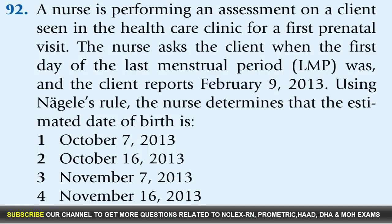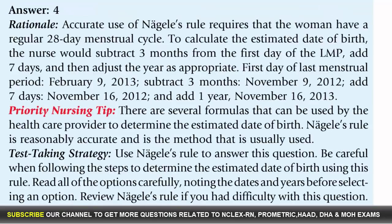Question 92: A nurse is performing an assessment on a client seen for a first prenatal visit. The client reports the first day of the last menstrual period (LMP) was February 9th, 2013. Using Nagele's rule, the nurse determines the estimated date of birth is: 1. October 7th 2013, 2. October 16th 2013, 3. November 7th 2013, 4. November 16th 2013. Answer: 4. Rationale: Using Nagele's rule, subtract 3 months from the first day of the LMP and add 7 days, then adjust the year. February 9th 2013, minus 3 months = November 9th 2012, plus 7 days = November 16th 2012, plus 1 year = November 16th 2013.